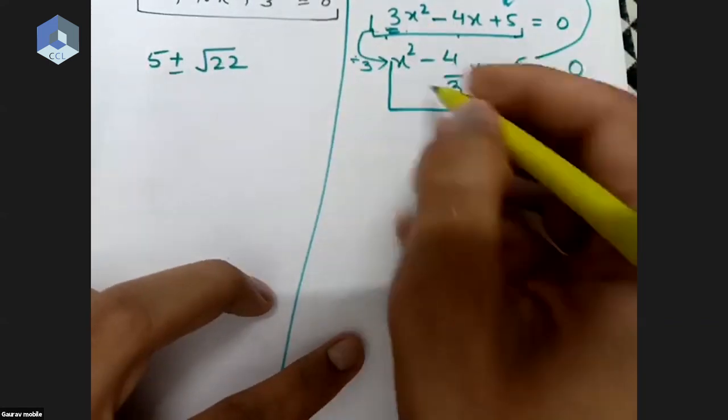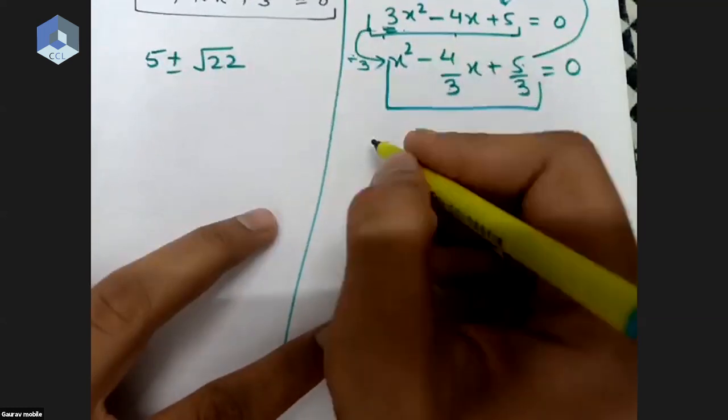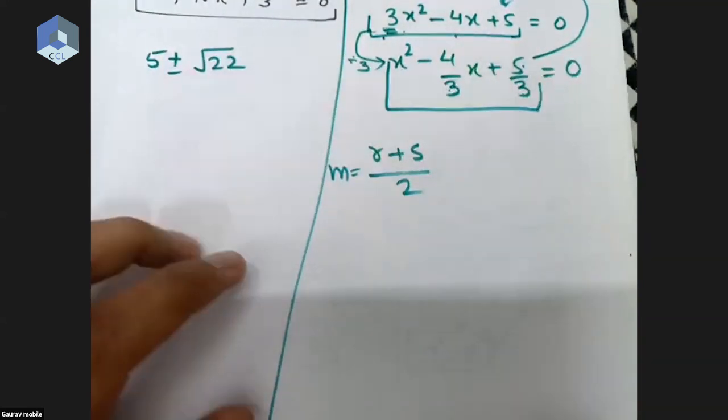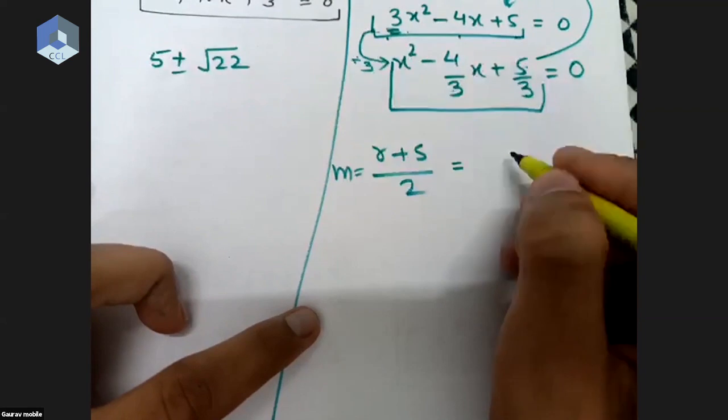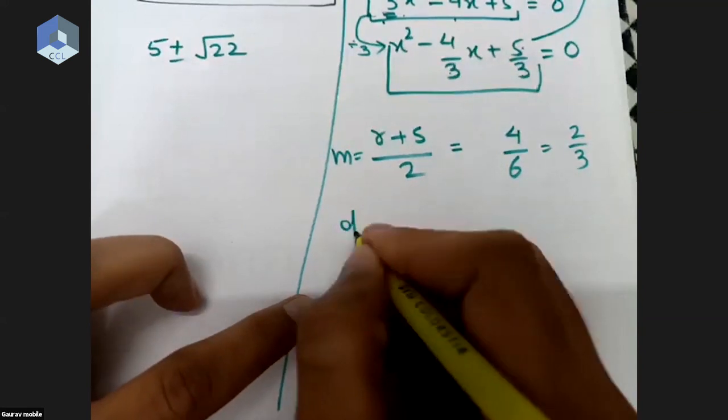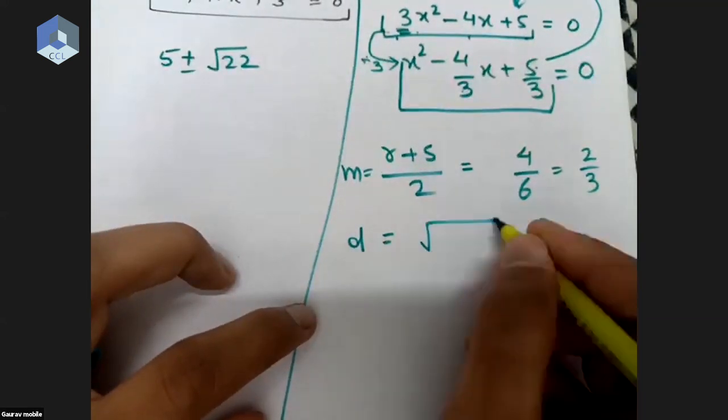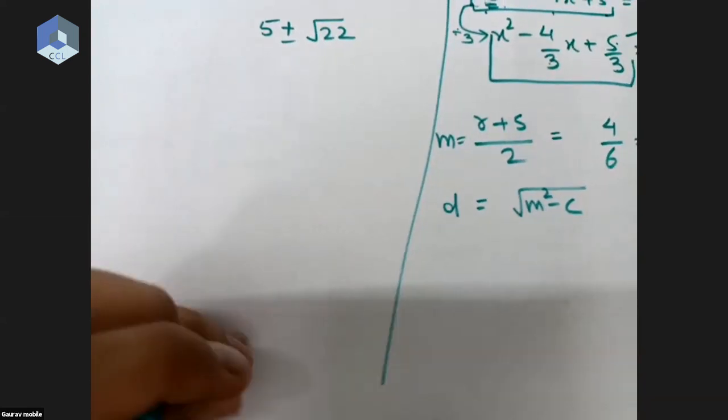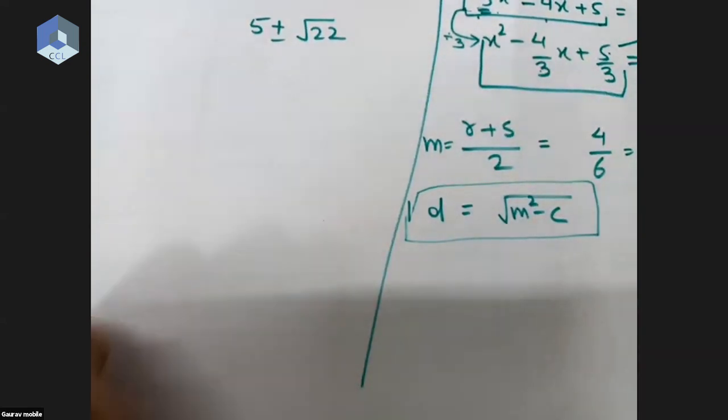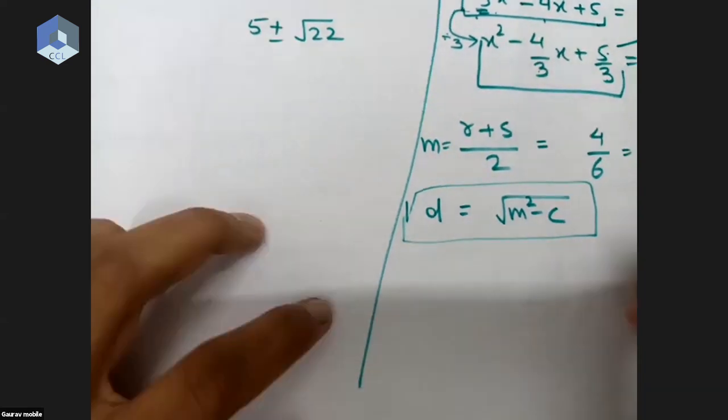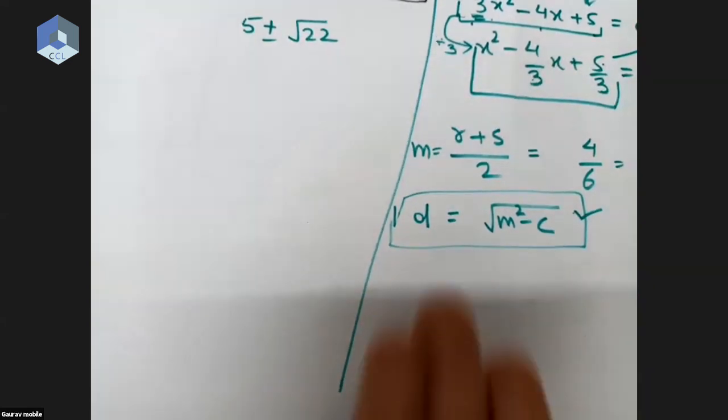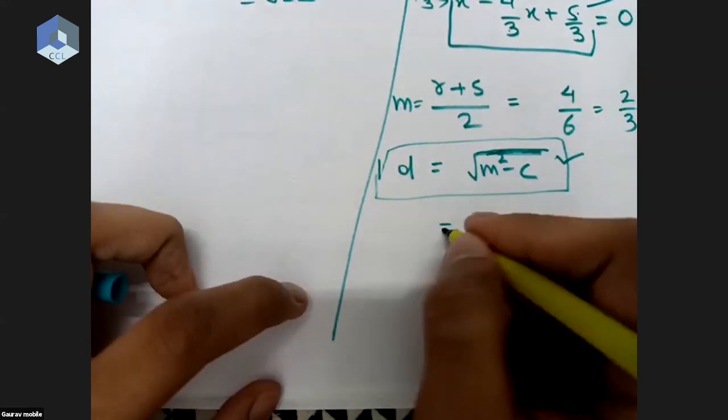Let's try with this: x square minus four by three x plus five by three equal to zero. If we have to remember something, we will remember this formula because this is a very nice readable formula. We know where it came from and we can derive it again.